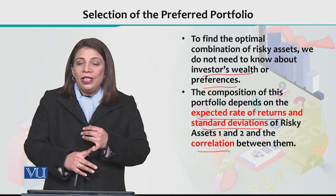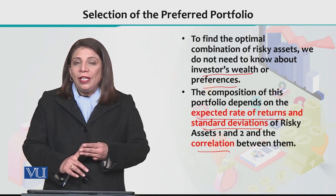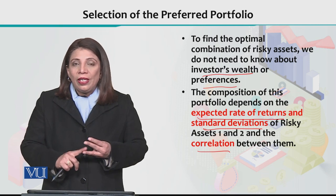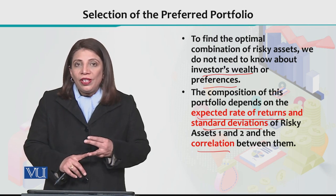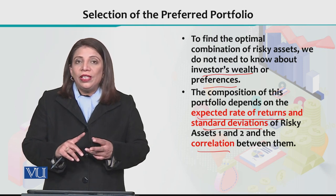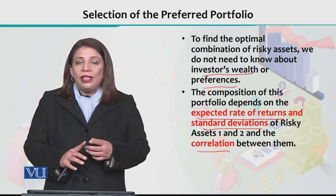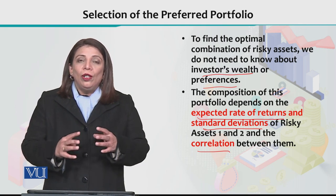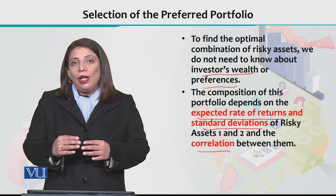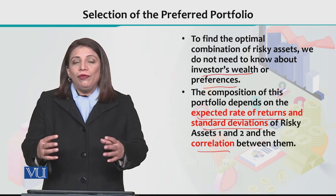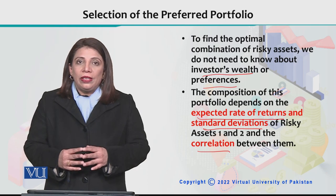So basically, when making optimum allocation, three key things are considered: expected returns, the risk level (sigma), and the correlation rho(1,2) between the risky assets being pooled in the portfolio. The investor's wealth and personal details are not considered. These are the important factors for optimal allocation when we have a choice of different risky assets — currently simplified to a situation with only two risky assets.